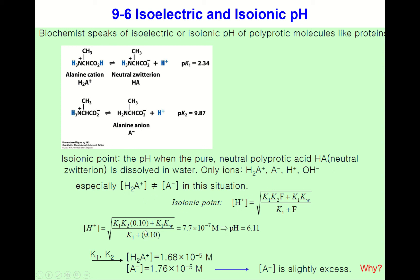For 0.1 molar alanine, the isoionic pH is calculated and equals 6.11. Using K1 and K2, we can further calculate the fully protonated and fully deprotonated concentrations. As you can see, the concentrations are not the same — A⁻ is slightly in excess.